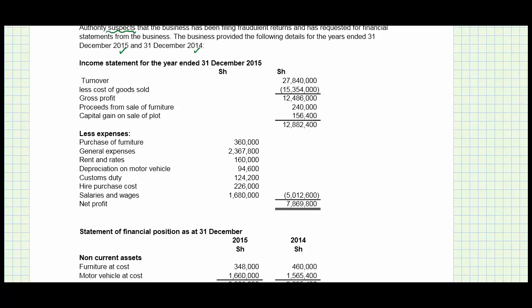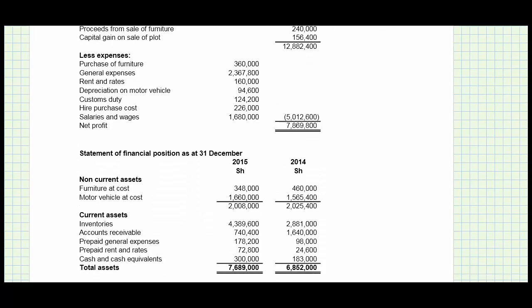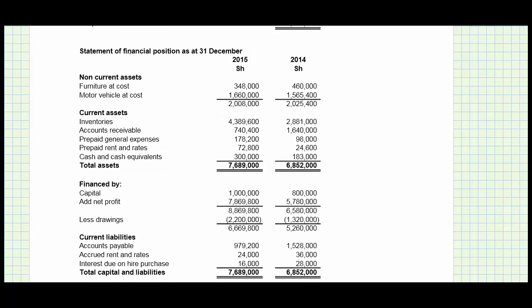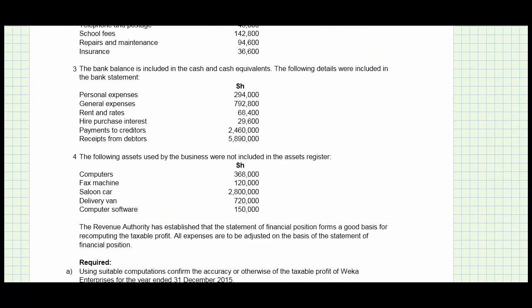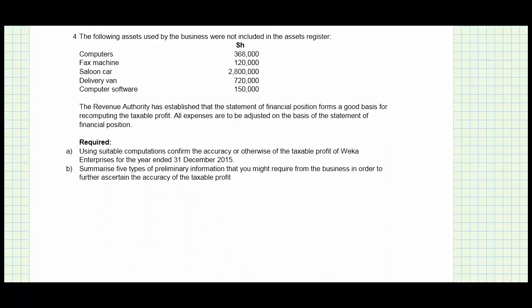We have the income statement for 2015, then we have the statement of financial position — the opening position at the start of 2015 and the closing position as at end of 2015. There is additional information provided, and we are required, using suitable computations, to confirm the accuracy or otherwise of the taxable profit of Wekal Enterprises for the year ended 31st December 2015. Part B is a different aspect looking at theory.